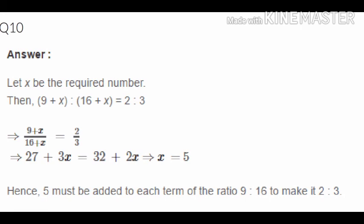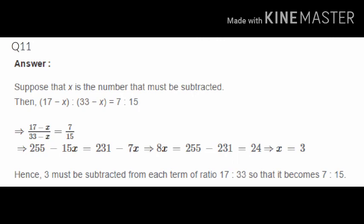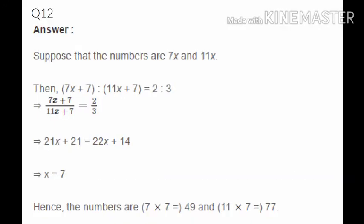Question 11: What number must be subtracted from each term of 17:33 to give 7:15? Let x be the number subtracted. Then (17 − x):(33 − x) = 7:15. Cross-multiplying and solving gives x = 3. So subtracting 3 from both gives the ratio 7:15.